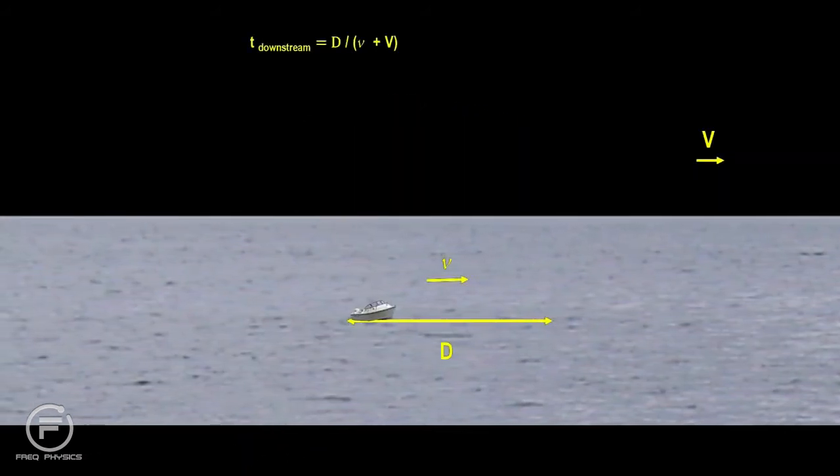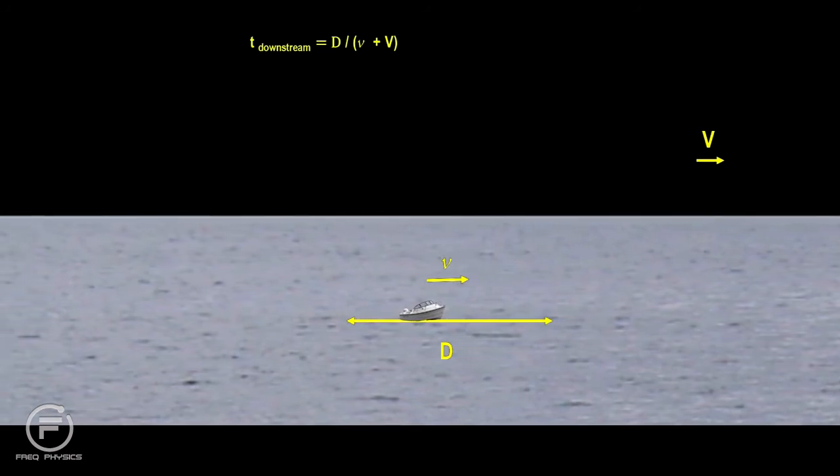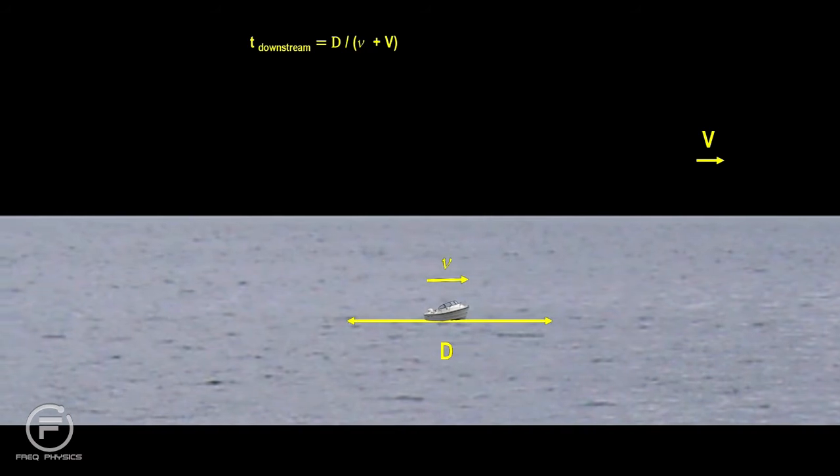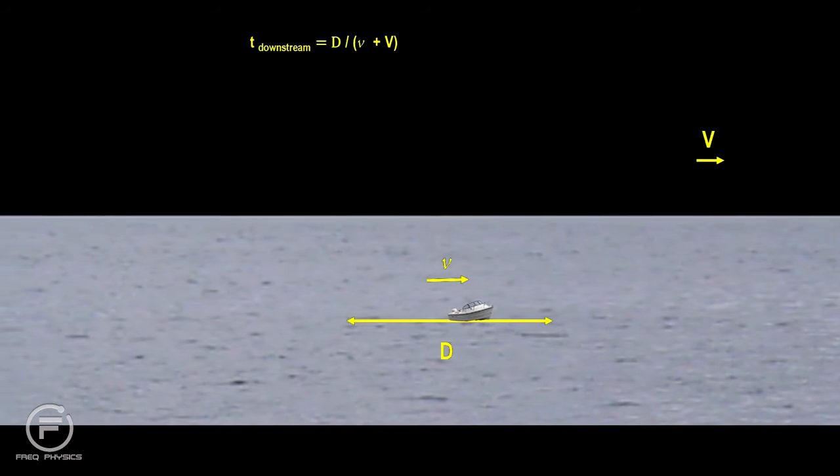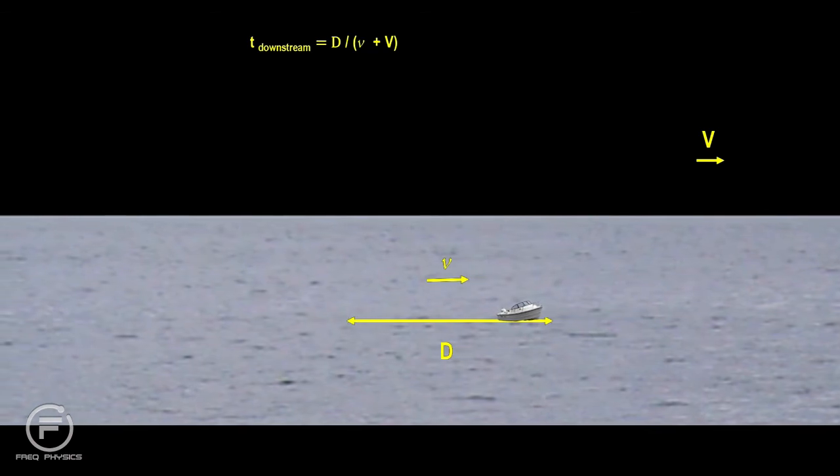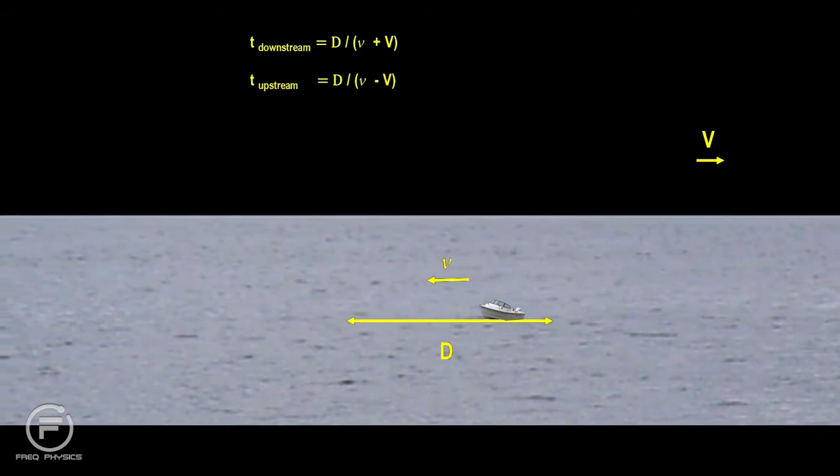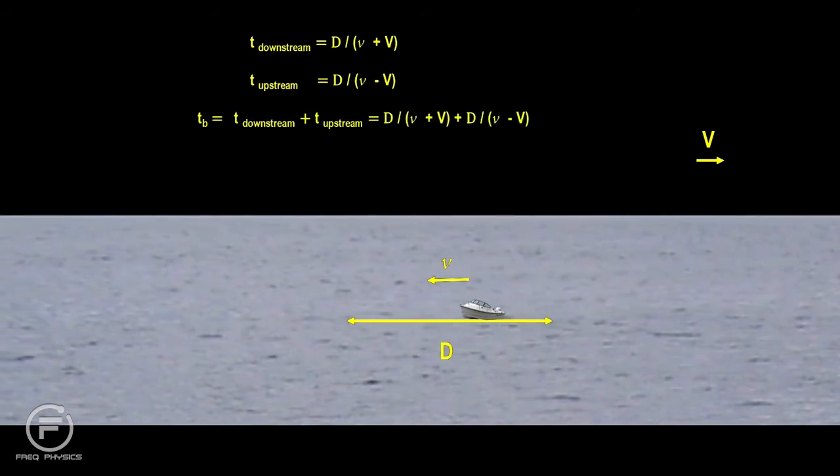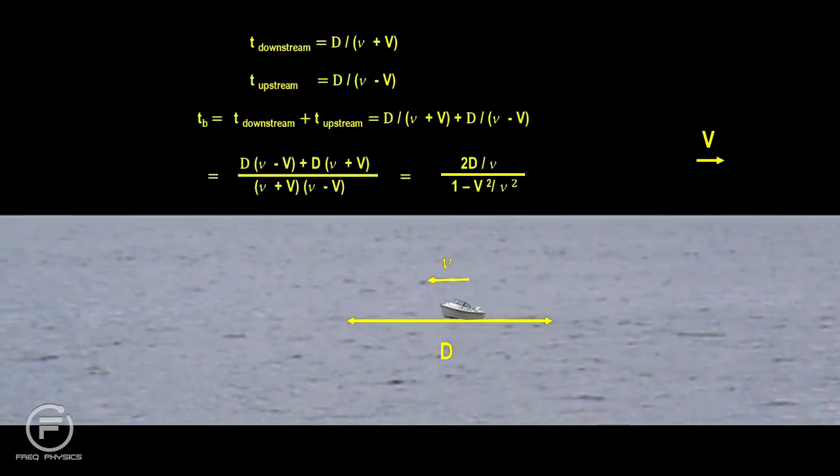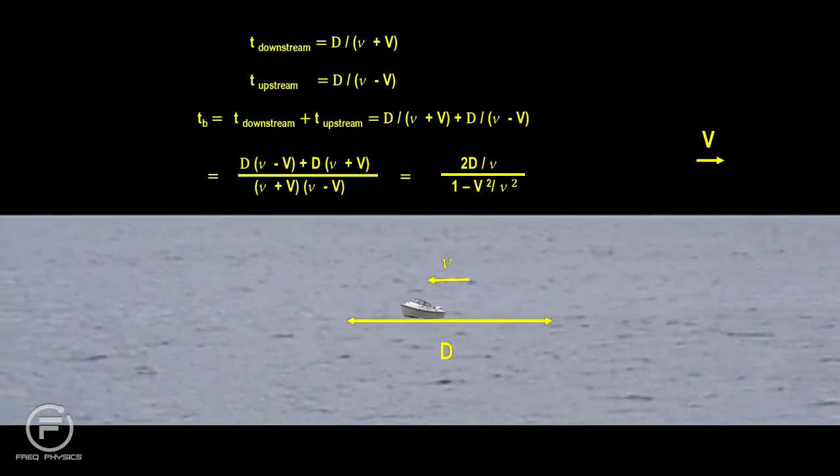Now let's take a look at the boat traveling down the river and back. The time it takes to go the distance d is simply d divided by the speed of the boat plus the speed of the river. The trip back takes d divided by the speed of the boat minus the speed of the river. Using the common denominator to add these two times gives us the time it takes to make this round trip.